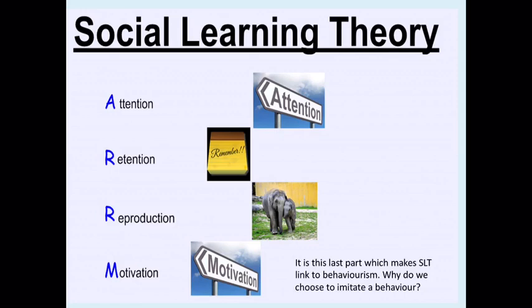Attention is seeing something and noticing it. Retention is remembering it — you can't reproduce something you've forgotten seeing. Reproduction is the belief that you can actually reproduce the behavior. For example: I've always wanted to do a cartwheel — I've seen people doing them, I know roughly how it works — but I'm fairly confident that if I tried I would look very silly and hurt myself, so I don't attempt it, because I don't believe I can reproduce that act.